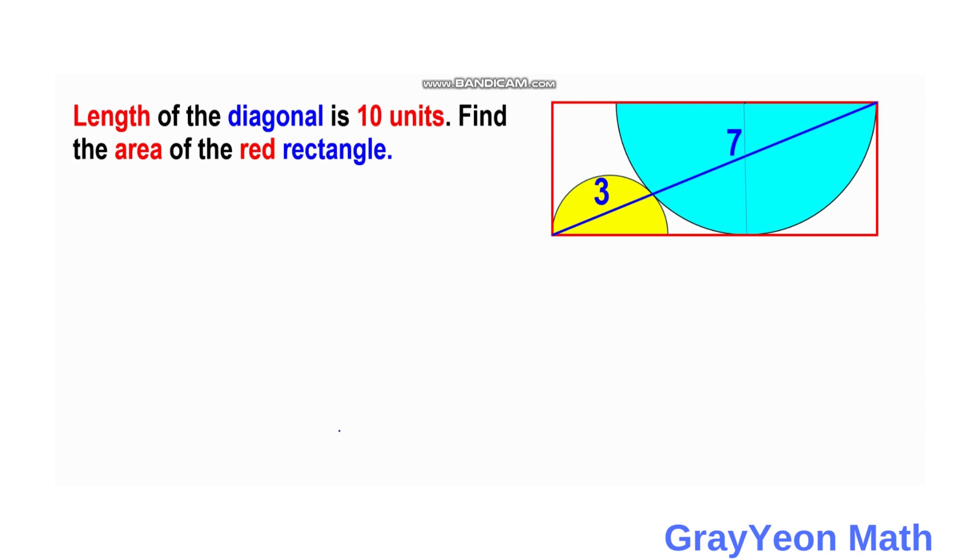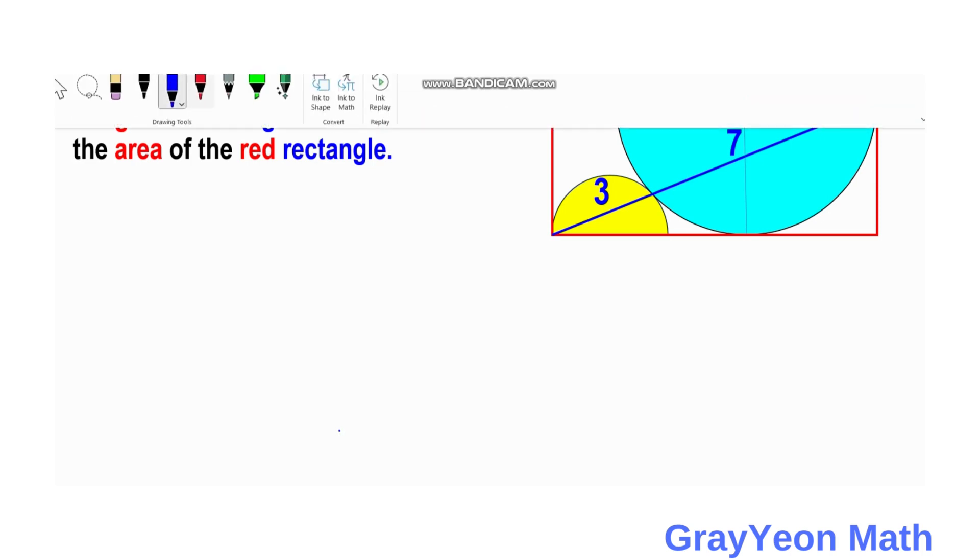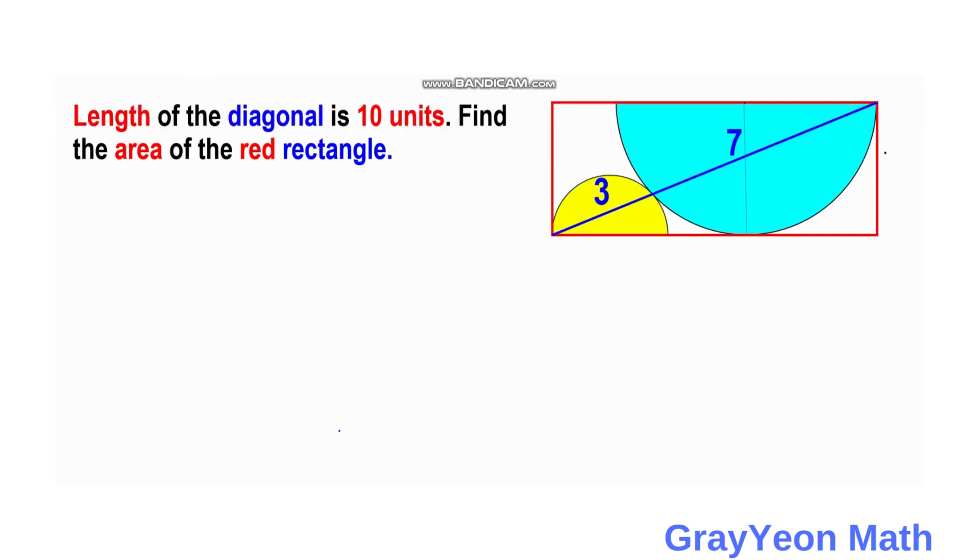So for any area of a rectangle, it is just simply the length times the width. But in our case, the width is actually equal to the radius. As you can see, this radius of this semicircle. So we label this width as R.